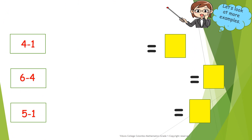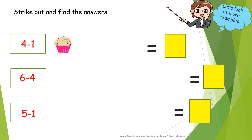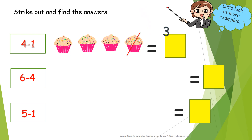Let's do more examples. Strike out and find the answers. There are four cupcakes. One, two, three, four. Four minus one. So, we have to strike out one. Now, how many cupcakes are remaining? One, two, three. Answer is three. Four minus one equals to three.